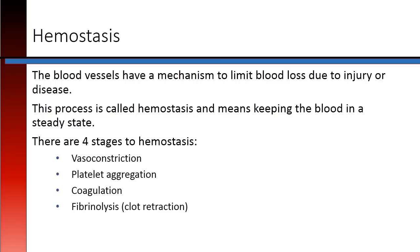Hemostasis. The blood vessels have a mechanism to limit blood loss due to injury or disease. This process is called hemostasis, meaning keeping the blood in a steady state. There are four stages of hemostasis: vasoconstriction, platelet aggregation, coagulation, and fibrinolysis, or clot retraction.